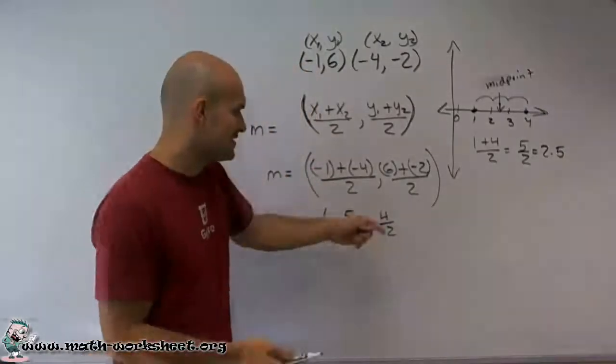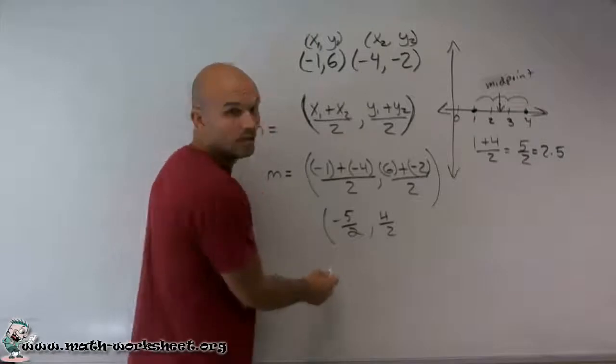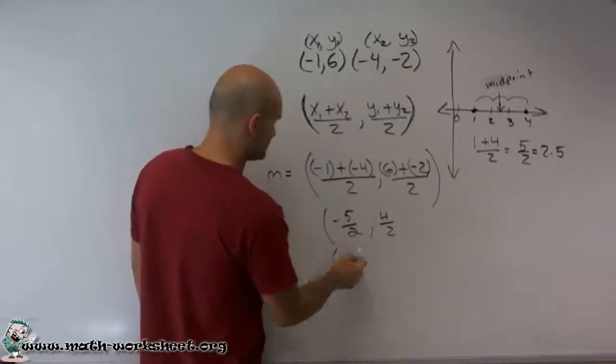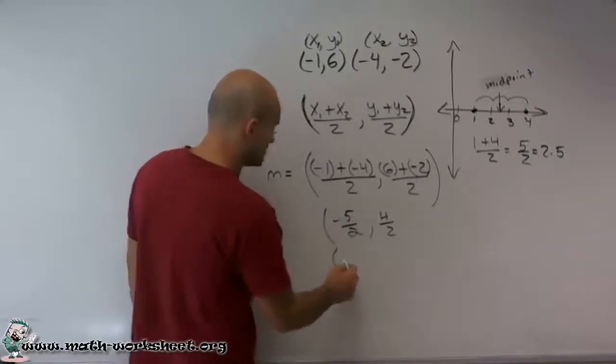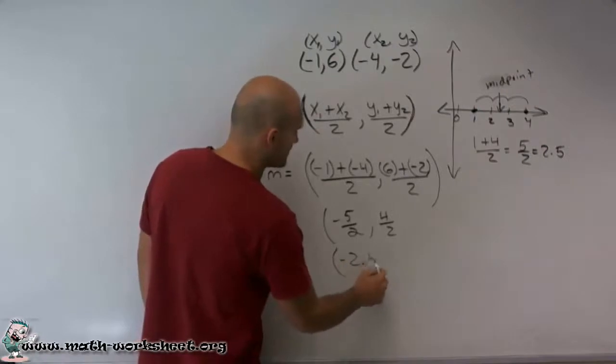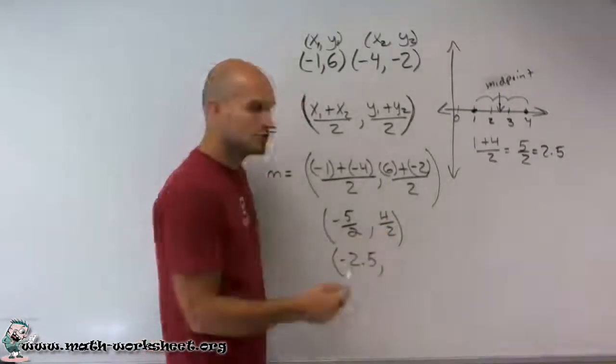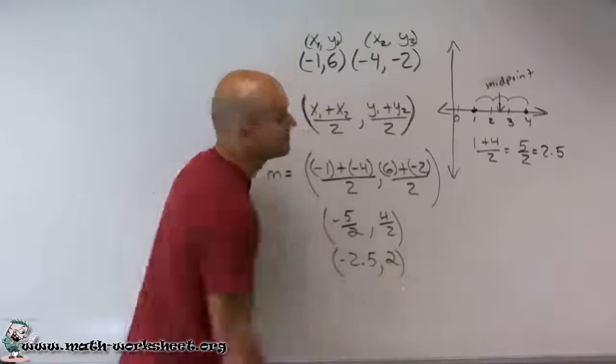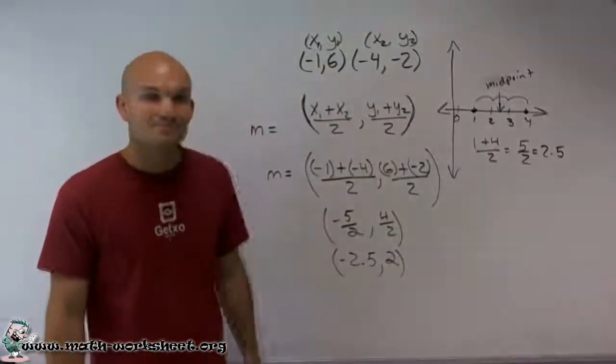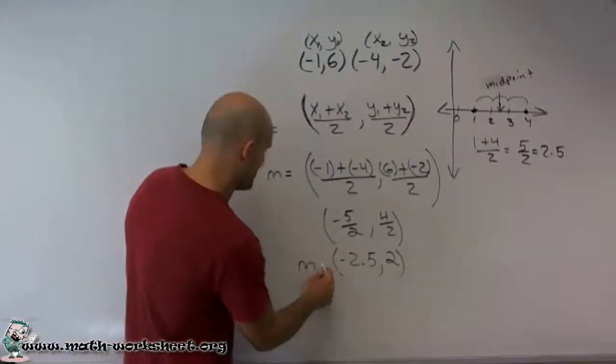And we can just leave it as a fraction. Obviously this can be reduced, but what we'll do is we can write it in decimals or we can leave this as a fraction. But as a decimal, this is negative 2.5 and, of course, 4 divided by 2 reduces to 2. So there you go, and that's what the midpoint equals.